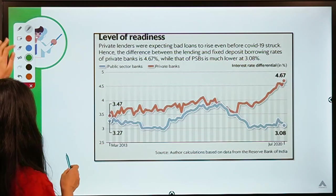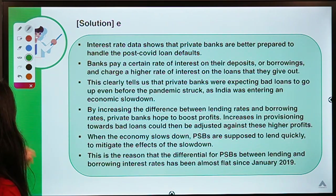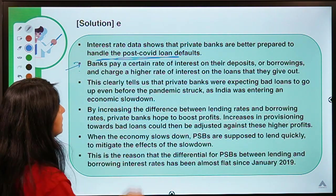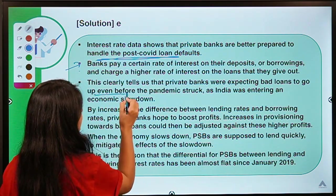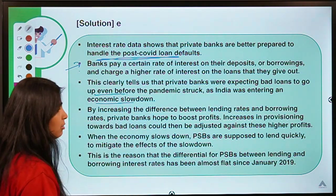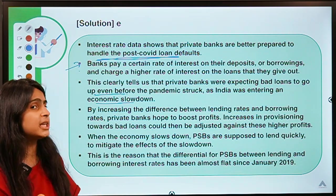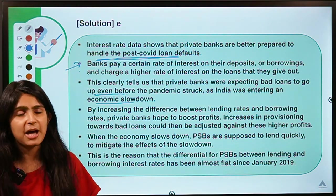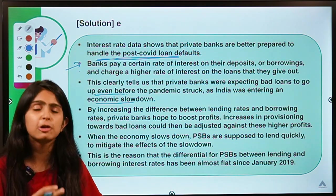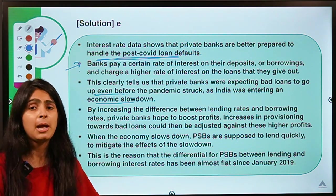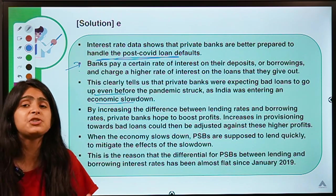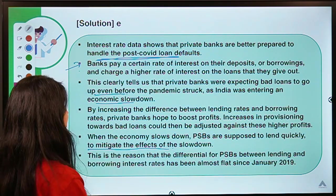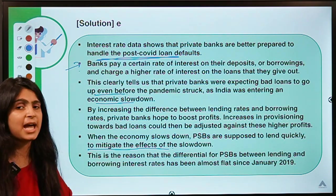Private banks are better prepared to handle post-COVID loan defaults. Private sector banks expected bad loans to go up, and before the pandemic struck India was entering an economic slowdown, so they started raising their lending rates. Public sector banks cannot do the same because major stake in them is held by the government, so there is pressure to lend at lower rates to stimulate demand and infuse cheaper credit into the economy. PSBs are supposed to lend more readily to mitigate the effects of the slowdown, which explains the difference in differentials between PSBs and private banks.